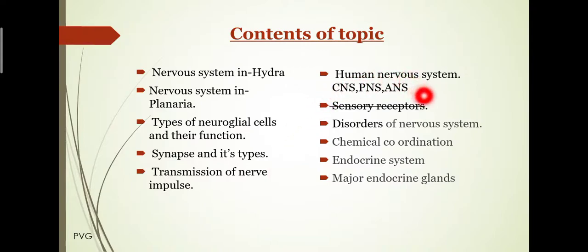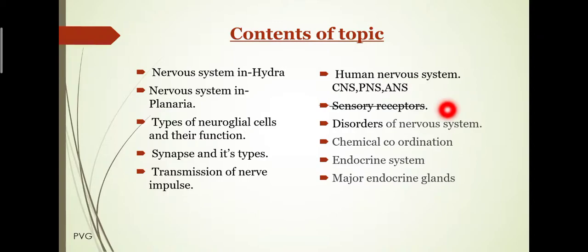Then human nervous system, in which there are 3 types: ANS, central nervous system, PNS (peripheral nervous system), and ANS (autonomous nervous system). Next point is sensory receptors — it is deleted due to COVID-19, only for this year. Then next one is the disorders of nervous system.